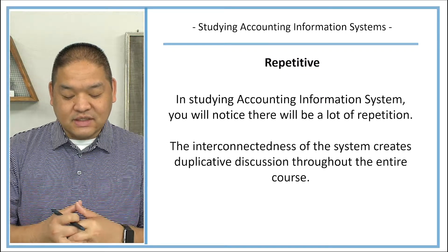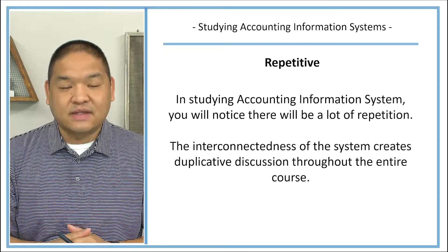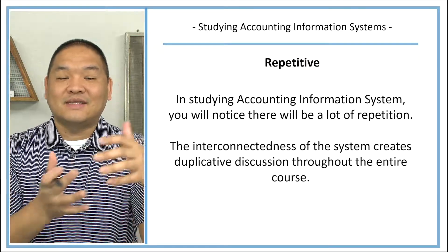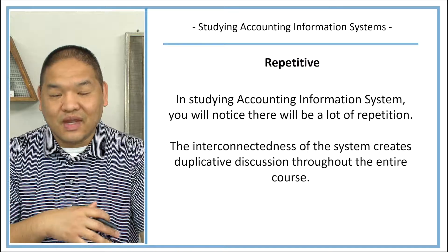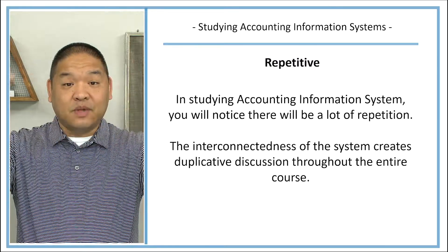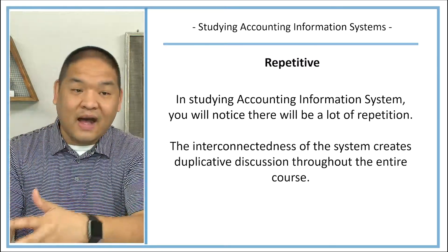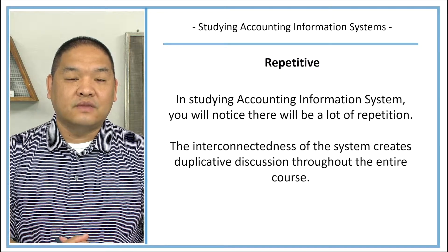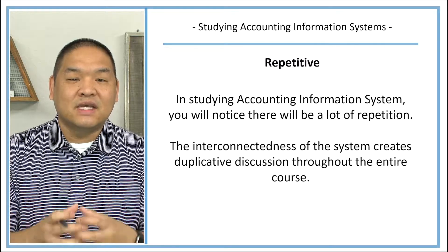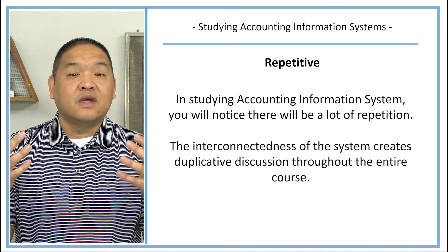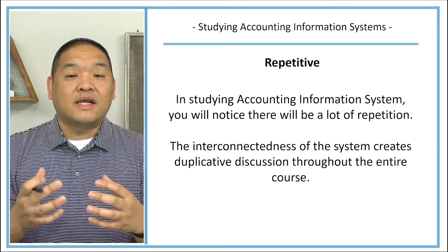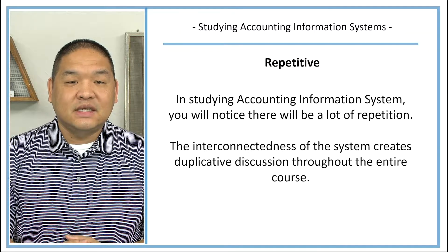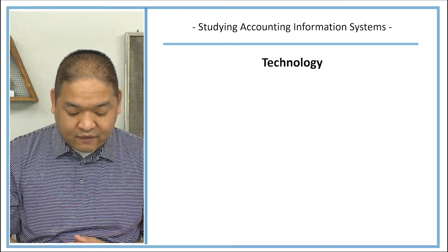So in studying accounting information systems, you'll notice that there will be a lot of repetition. The interconnectedness of the system creates duplicative discussions throughout the entire course. So because we're talking about this, we also set the link back to something that we talked about in section one or section three. And then because we're talking about this big picture, we have to then connect it with section five, three, and one. And so we're repeating some of the same things that we've talked about because of the interconnectedness of a system, which we would want our system to do. Our system—we want it to circle back around so that it comes back to the very beginning, and that's what we're going to see here as we talk more about accounting information systems.